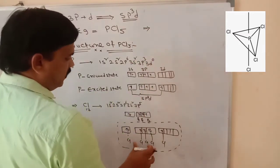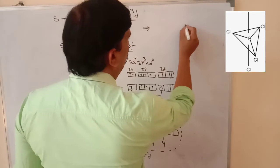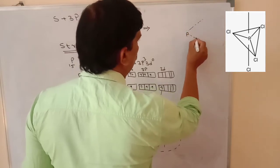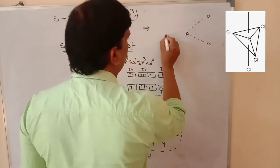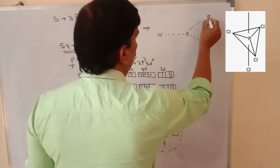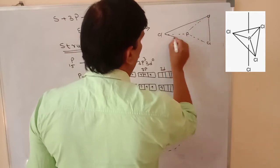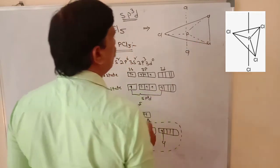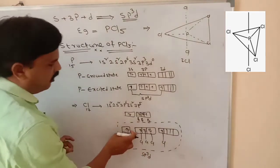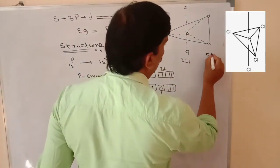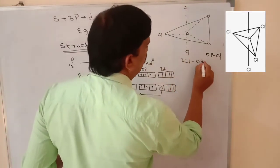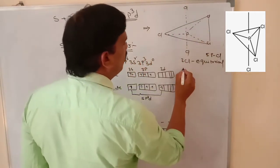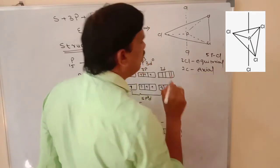What is the shape? Three chlorines are occupied at the corners in the equatorial position. Above there is one chlorine and below there is one chlorine — these are in the axial position. The three equatorial chlorines form three sigma bonds, giving five phosphorus-chlorine sigma bonds in total.